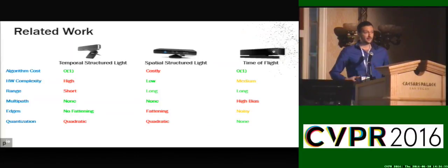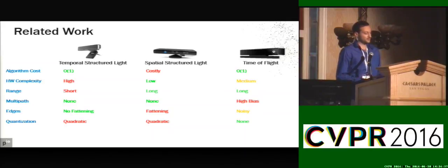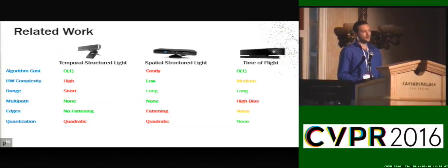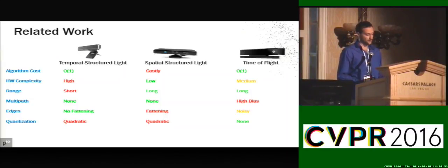Time-of-flight technologies, for example Kinect V2, are also an O(1) algorithm. However, there is the so-called multipath interference, which completely undermines this technology when you want very precise measurements of the scene. There is a lot of work going on to solve this problem, but right now there are no general solutions.